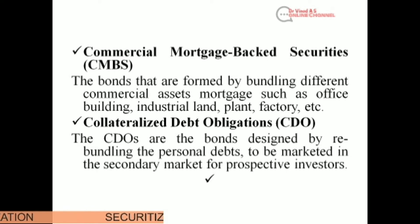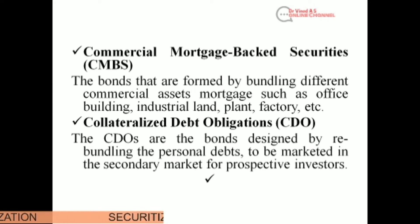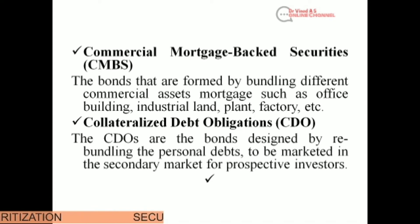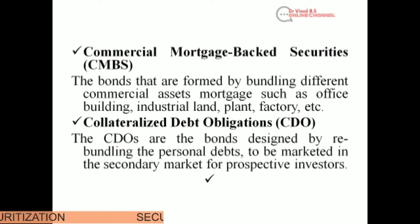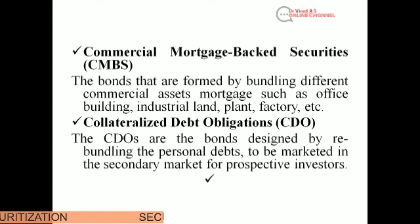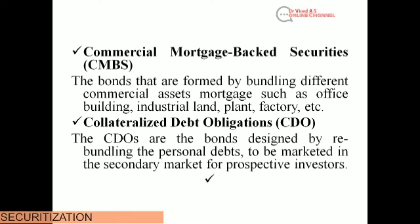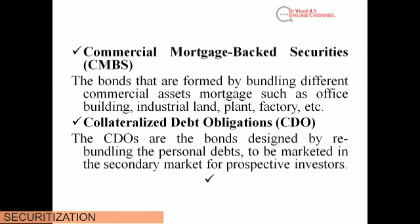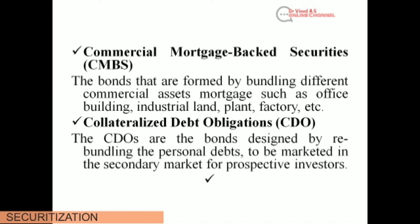The third type is Commercial Mortgage-Backed Securities or CMBS. These are bonds formed by pooling different commercial asset mortgages such as office buildings, industrial land, and planned factories. Any bond formed from different commercial assets falls under the category of CMBS.